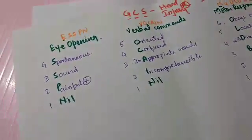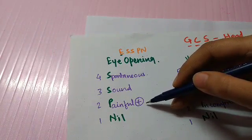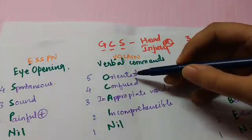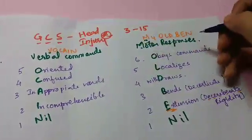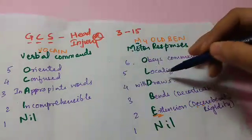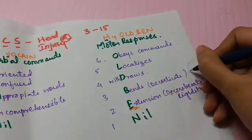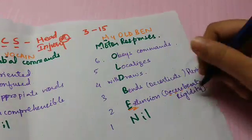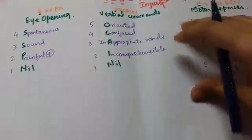Quick revision: Eye opening — ESSPN: spontaneous eye opening, eye opening on sound, eye opening on painful stimulus, and none. Scored 4, 3, 2, 1. Verbal commands — vocaine: oriented, confused, inappropriate words, incomprehensible words, and nil. Scored 5, 4, 3, 2, 1. Motor responses — my old Ben: obeys commands, localizes, withdraws, bends (decorticate rigidity / flexion), extension (decerebrate rigidity), and nil. Scored 6, 5, 4, 3, 2, 1. Adding up: 4 + 5 + 6 = 15 maximum, and 1 + 1 + 1 = 3 minimum. So GCS is never 0.